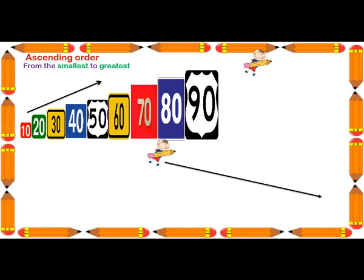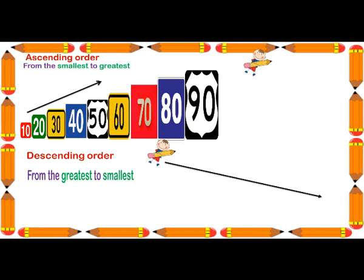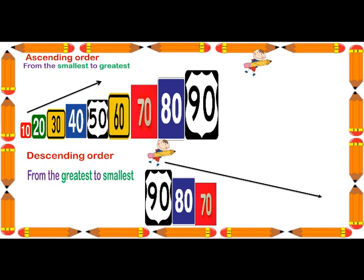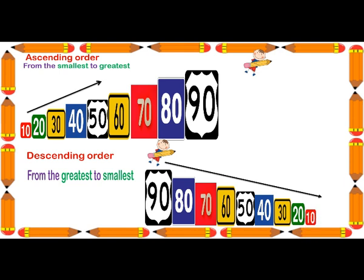Now students, do you remember descending order? From the greatest to smallest number. While counting in tens, the smallest number is 10 and the greatest number is 90. The greatest number is 90, then 80, 70, 60, 50, 40, 30, 20, and 10. Ten is the smallest number here. So the boy is coming downwards from 90 to 10.